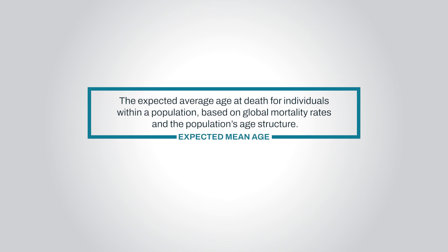Additionally, we created expected age of death to compare against. The expected mean age reflects the expected average age at death for individuals within a population, based on global mortality rates and the population's age structure. This allows us to compare a country's performance against a global benchmark, gauging their progress toward global development goals. It compares a country's actual age of death to an expected age based on global data, and that tells you if people in that country are dying from a disease earlier or later than they should be.